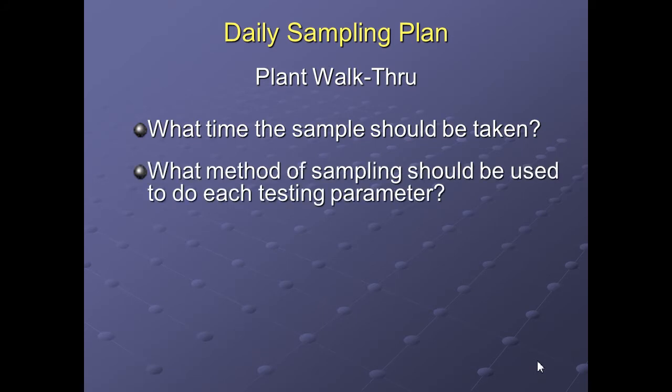Operators reading the sampling plan will know which samples need preservatives if they're being transported a long distance to the lab. Think through every step. Your sampling plan should be driven first by your permit — it will tell you how many times to sample, where to sample, and what your final results should look like. You can then add operational parameters to keep track of what's happening in the system day-to-day.